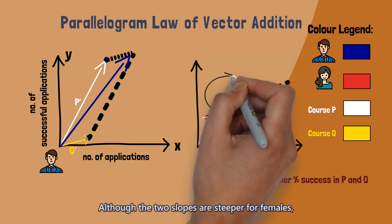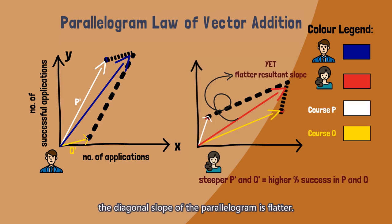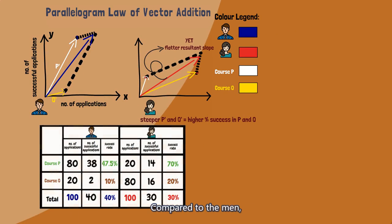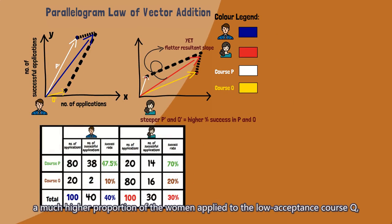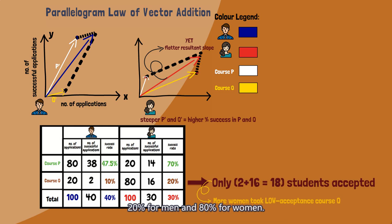Although the two slopes are steeper for females, the diagonal slope of the parallelogram is flatter. Compared to the men, a much higher proportion of the women applied to the low acceptance Course Q, 20% for men and 80% for women.